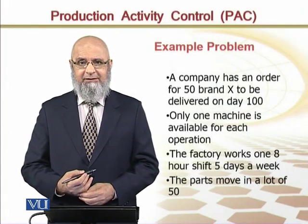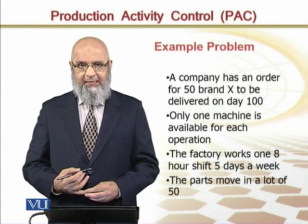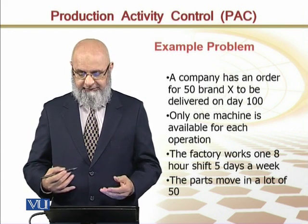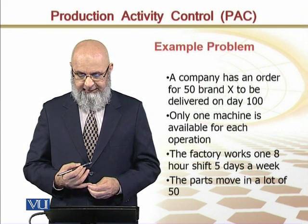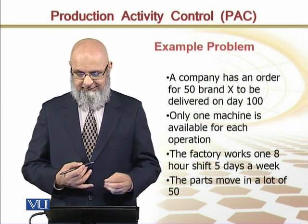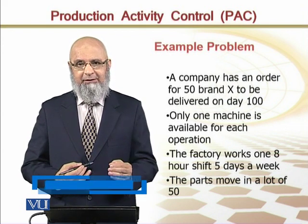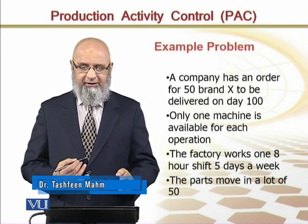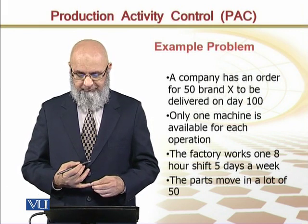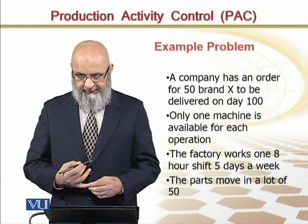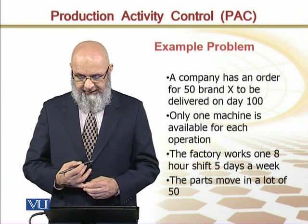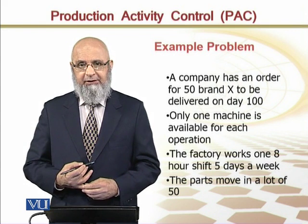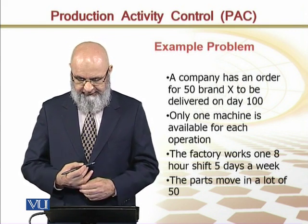Let's look at an example problem. In this example, there is an order for 50 units of brand X to produce and deliver on the 100th day. We will use one machine for each operation. A factory works one 8-hour shift, 5 days a week, which means there are 40 hours per week available.